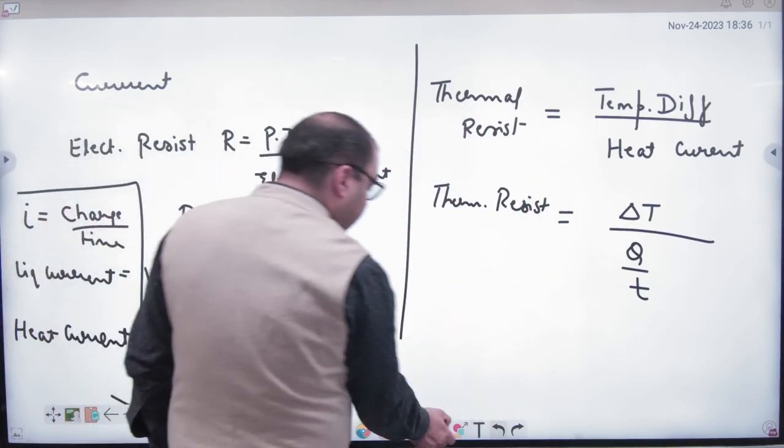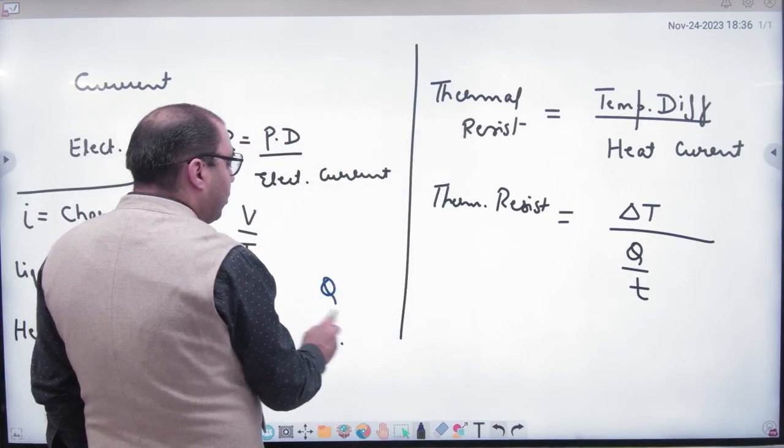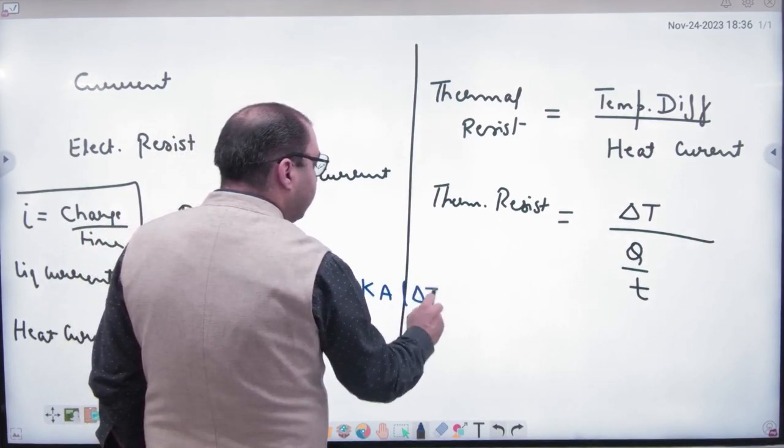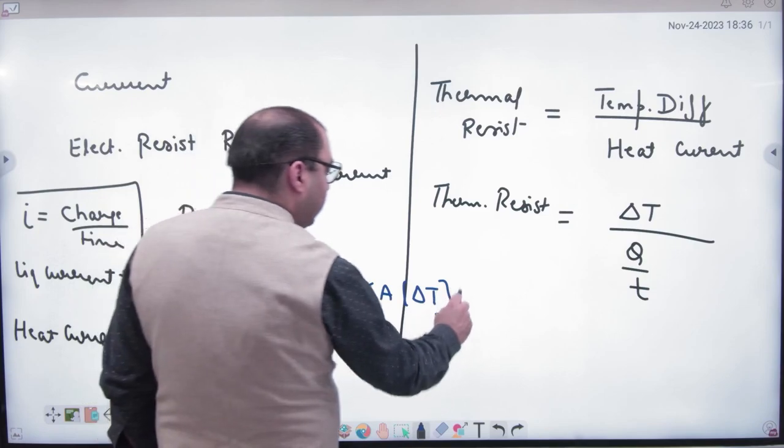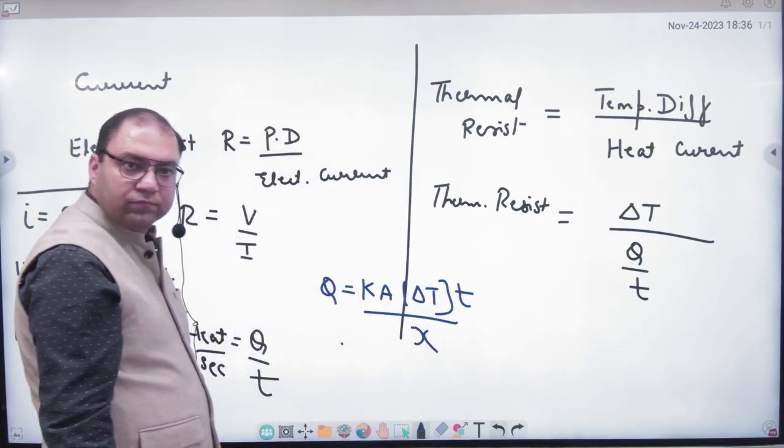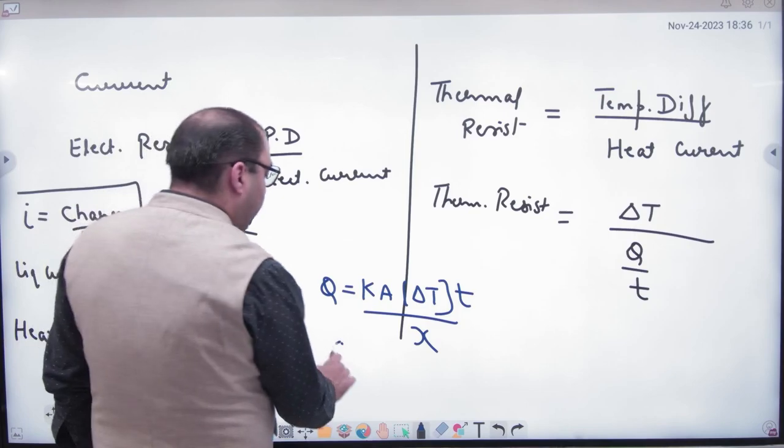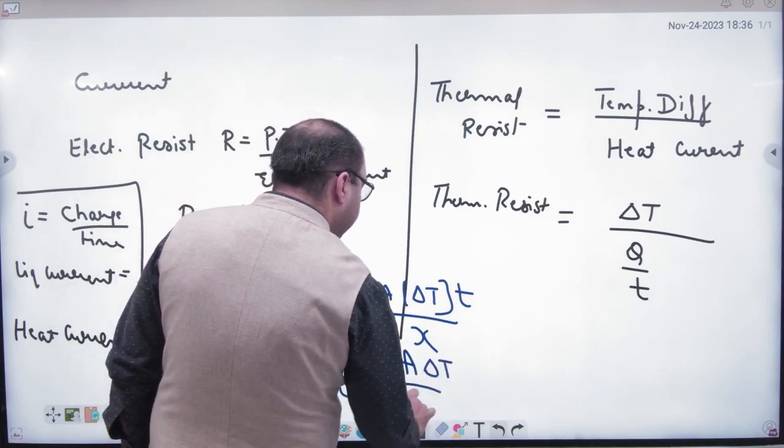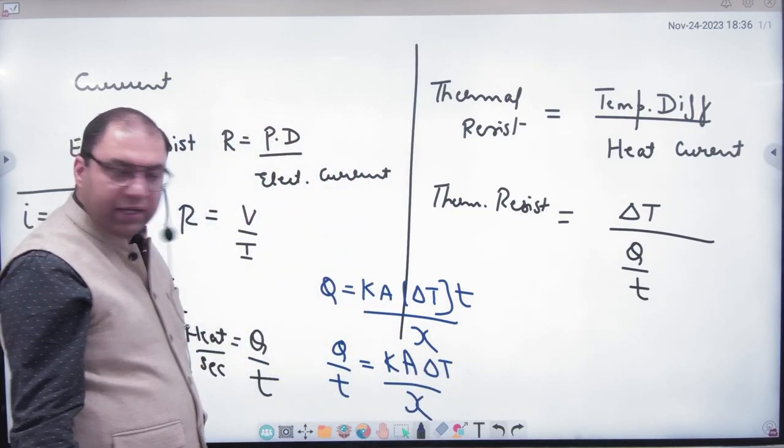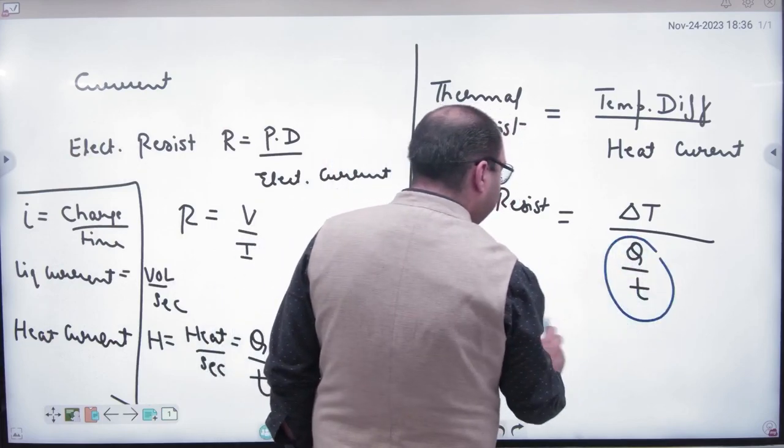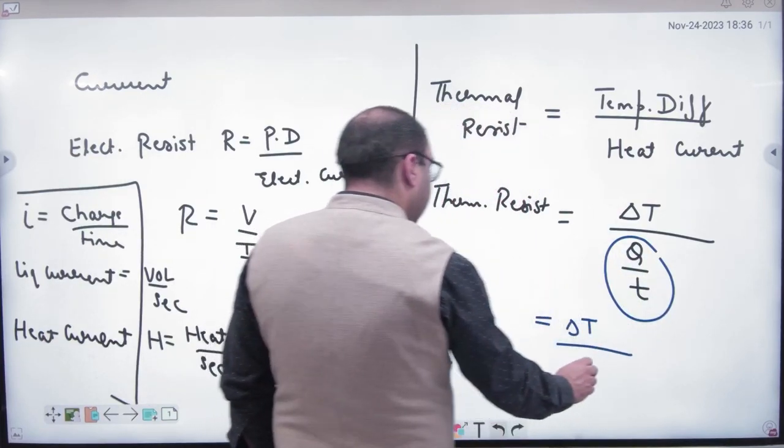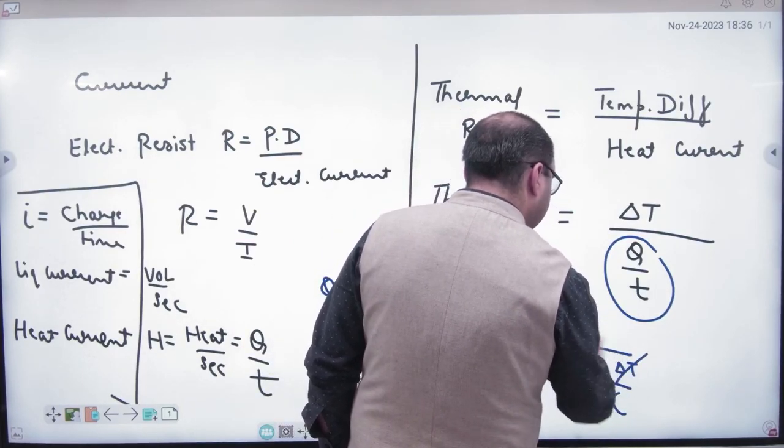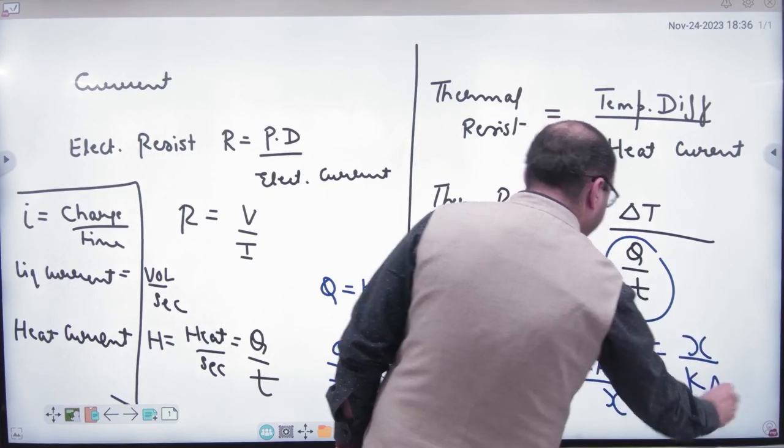Now if I ask the value of Q by T, what was the value of Q? K A temperature difference into time divided by length X. We did this. We have to cross-multiply here. So we have to put this heat current here. What is the current? Delta T divided by K A delta T divided by K A. This is cancelled. So what is the answer? X divided by K A.